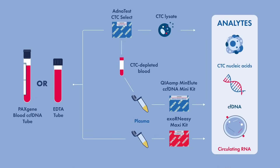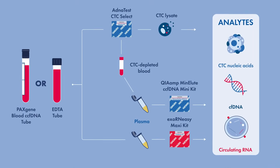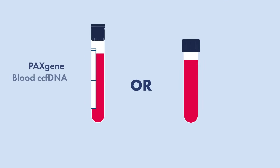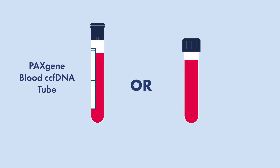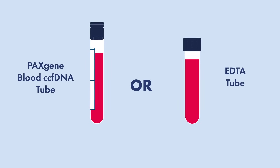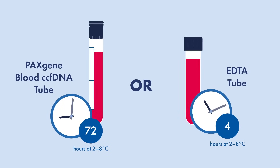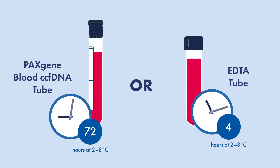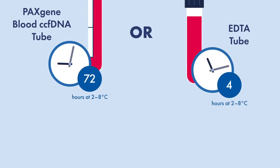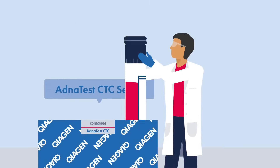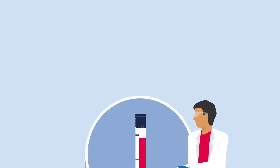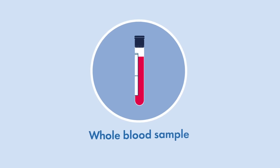How does it work? Start by using only two PaxGene blood CCF DNA tubes, or EDTA tubes. CTC nucleic acid samples collected using PaxGene blood CCF DNA tubes are stable for up to 72 hours. You can use the Adnetest CTC Select to isolate and enrich CTCs from a whole blood sample.